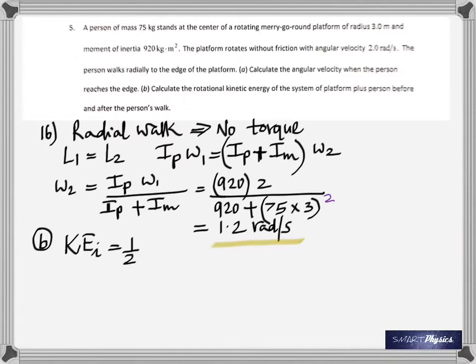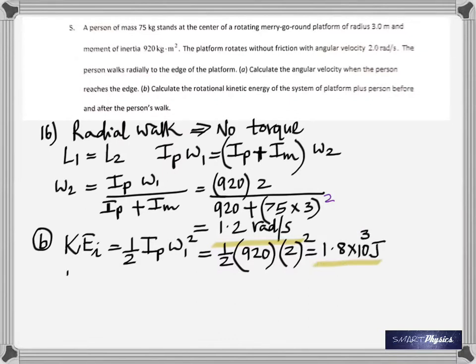Second part: you have to find the kinetic energy before and after. Initially, kinetic energy before is half times Ip omega 1 squared. Ip is 920, which gives me 1.8 times 10 to the 3 joules. After, or final, you'll have to add the moment of inertia of the platform with the moment of inertia of the man times omega 2 squared.